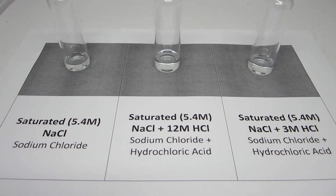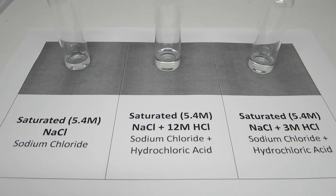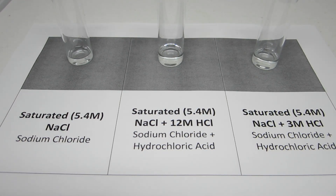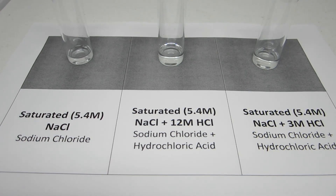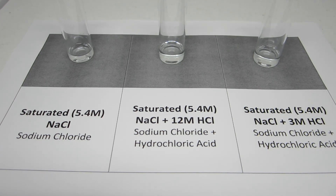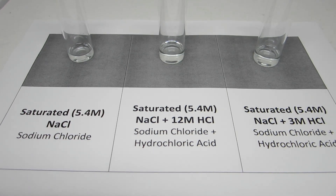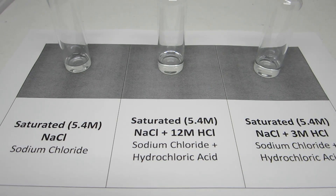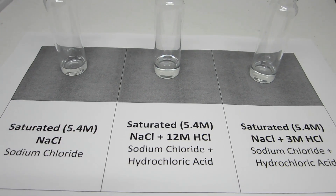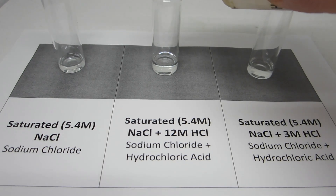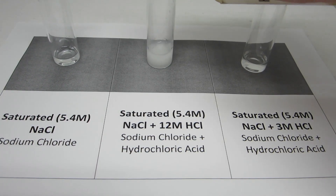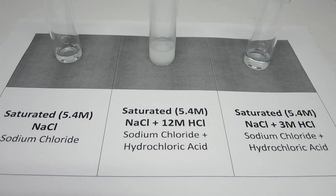The third equilibrium reaction looks at the precipitation and solubility of sodium chloride. Sodium chloride has a solubility limit of 5.4 molar, meaning that at 5.4 molar the solution is saturated and no additional ions can be dissolved by the water. The sodium chloride solution initially is a clear colorless liquid. Upon addition of 12 molar hydrochloric acid, the chloride concentration exceeds the 5.4 molar solubility limit, and a white precipitate forms.